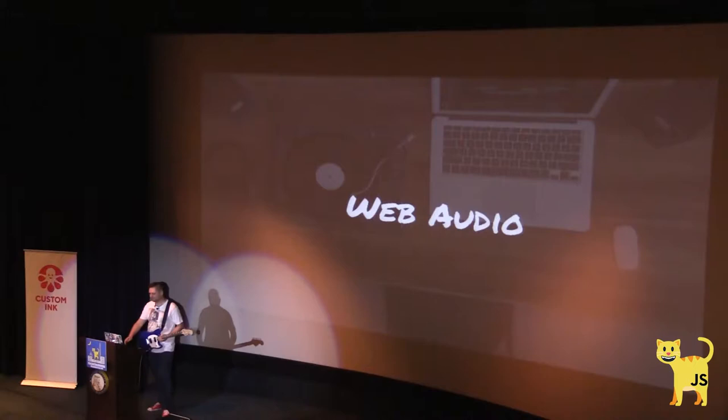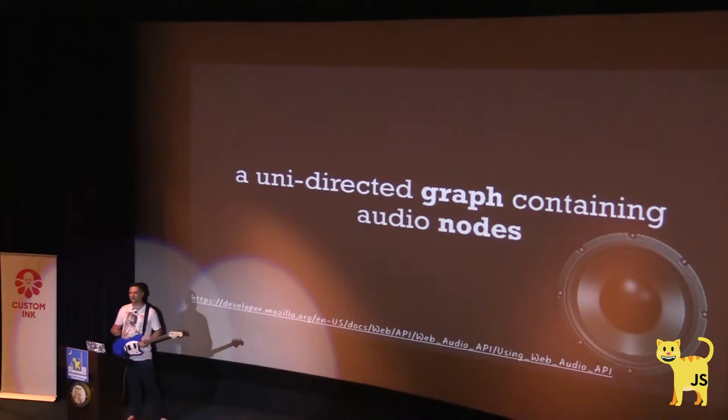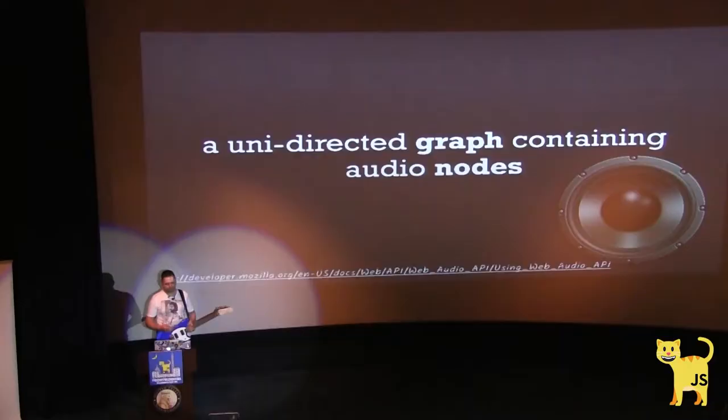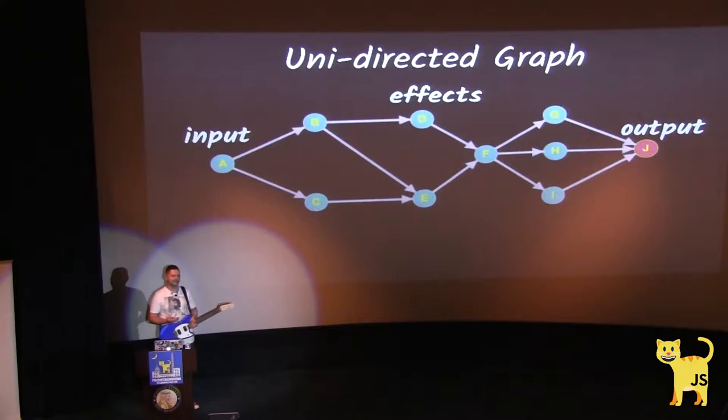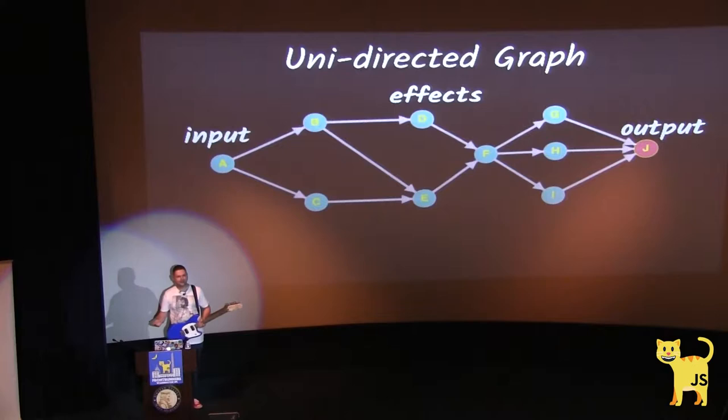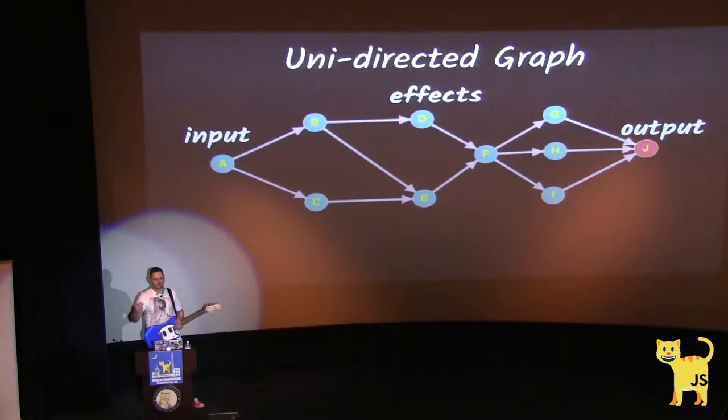So, what is Web Audio? Web Audio is just an API that uses a unidirected graph that contains audio nodes — small primitives that allow you to process or create your music in a browser. A graph is a bunch of nodes and edges that connect these nodes. In an unidirected graph, connections between nodes have direction only to one side, from point A to point B.